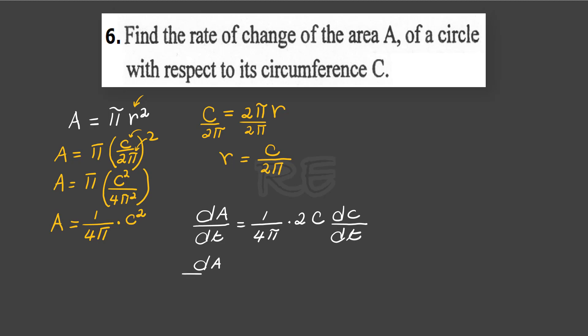The derivative will be, when we cross cancel, 1 over 2 pi.